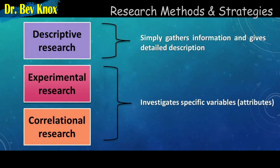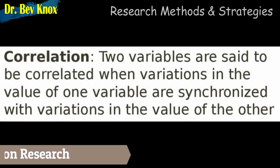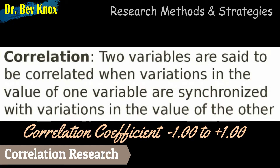In using descriptive research methods, researchers often wish to determine the relationship between two variables. Variables are behaviors, events, or other characteristics that can change or vary. In correlational research, two sets of variables are examined to determine whether they are associated or correlated. The strength and direction of the relationship between two variables are represented by a mathematical statistic known as a correlation coefficient, which can range from +1.0 to -1.0. Please review the video lesson on statistics and correlation.